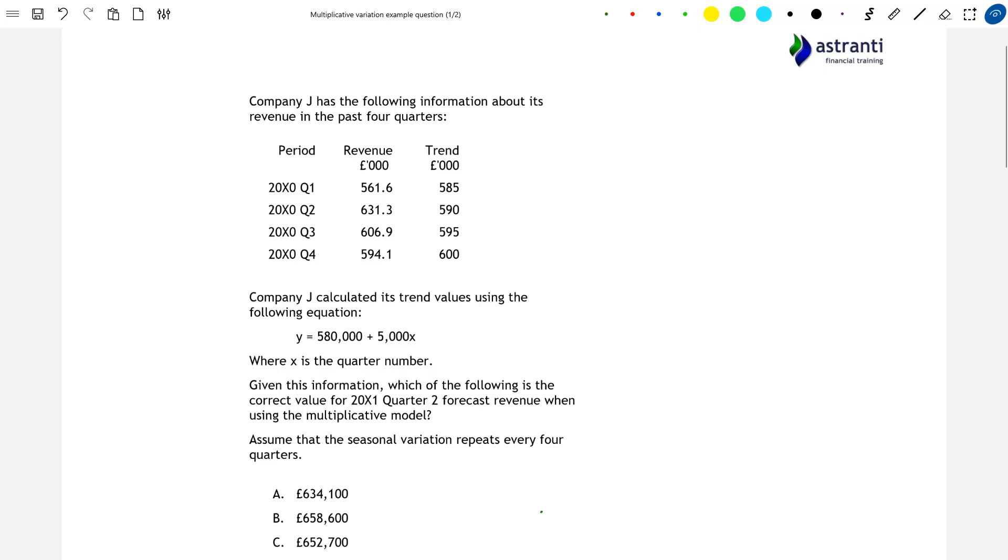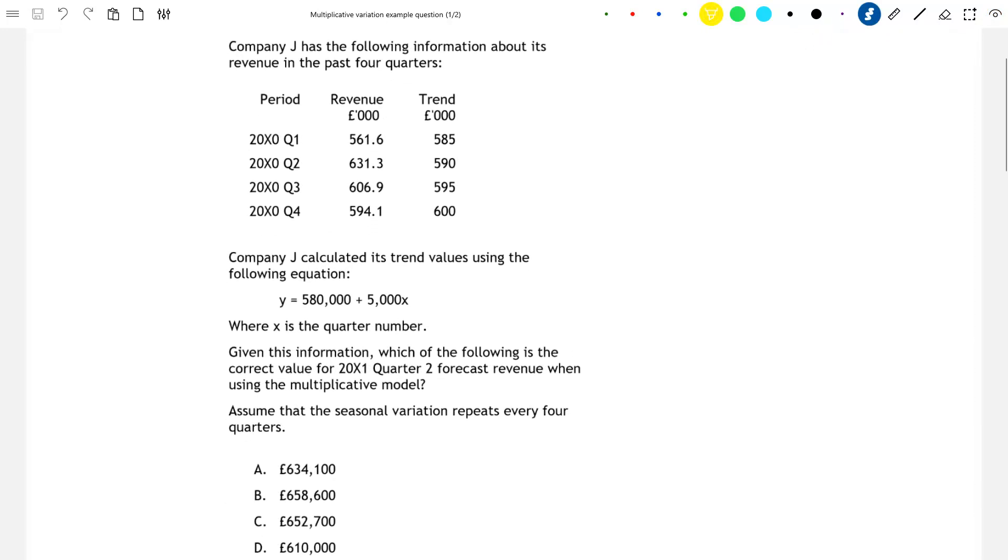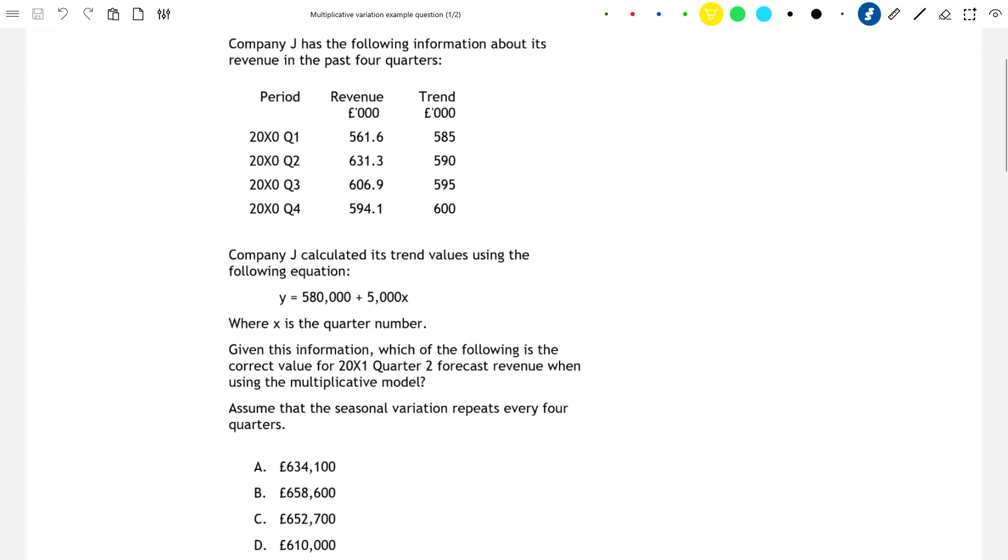So let's jump right into our question about the multiplicative model. Company J has the following information about its revenue in the past four quarters. We have the figure for the revenue in each quarter in thousands of pounds and also the trend value for this revenue again in thousands of pounds.